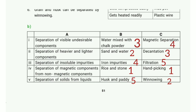Section B: separation of visible components — the answer is rice and stone, hand picking. Separation of heavier and lighter components — the answer is winnowing. Separation of insoluble impurities — water mixed with chalk powder, decantation. Separation of magnetic components from non-magnetic components — iron impurities, magnetic separation. Separation of solid from liquids — the answer is filtration.